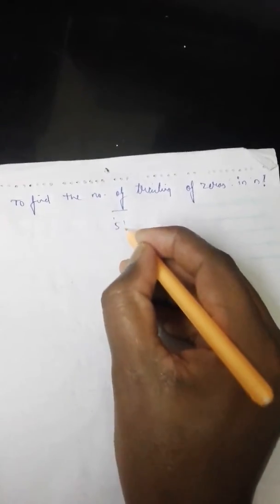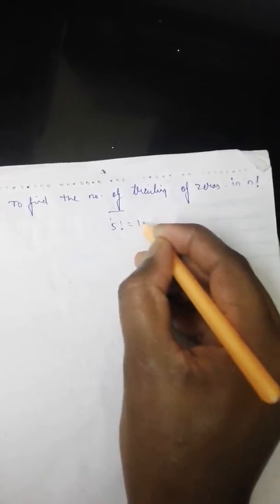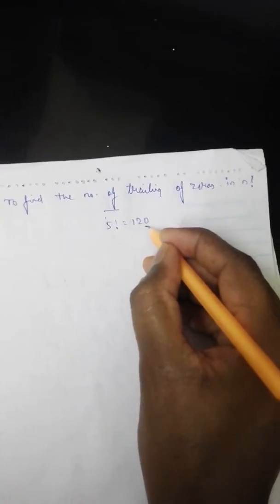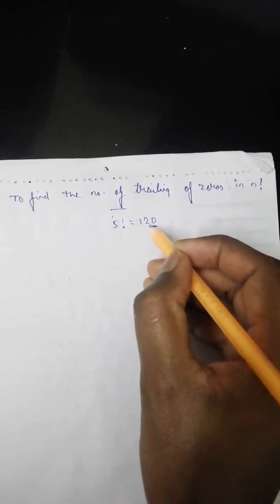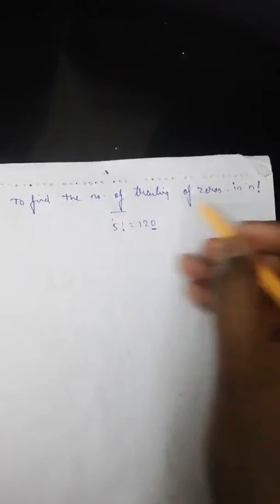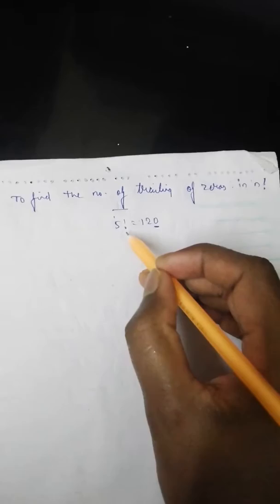The number of trailing zeros means the number of zeros which are coming at the end of the n factorial value. For example, 5 factorial is 120 — since there is one zero at the end, we say there is one trailing zero in 5 factorial.